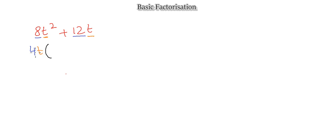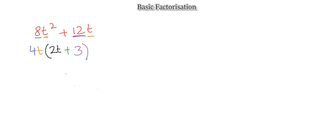Inside the bracket: 4t times 2t gives 8t², and 4t times 3 gives 12t — so the factorized form is 4t(2t + 3). You can expand it to verify you get back to 8t² + 12t.